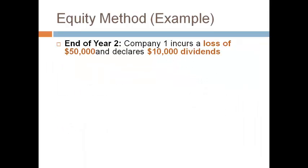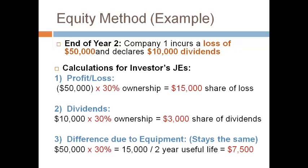At the end of the second year, the investor must record the same three journal entries to keep the investment account proportionate to the investee's owner's equity. The first entry records the investor's share of profit or loss. The second records the investor's share of dividends. The third eliminates the difference for a one-year period. Notice that all amounts are multiplied by 30% — do not forget to multiply by the percent ownership.